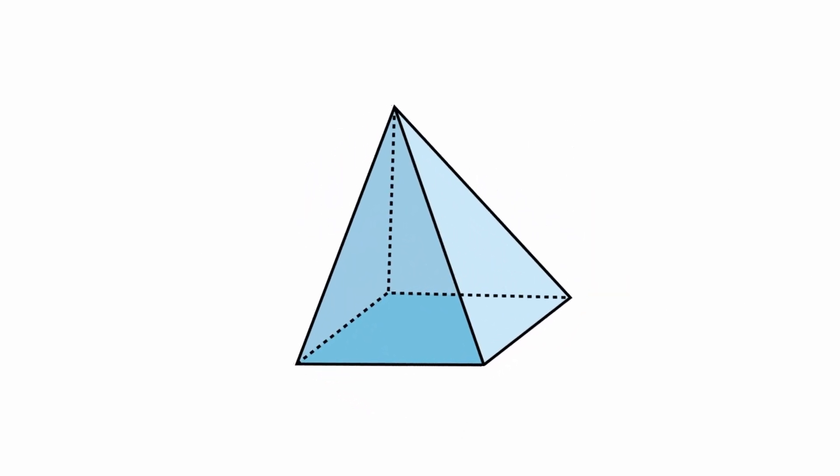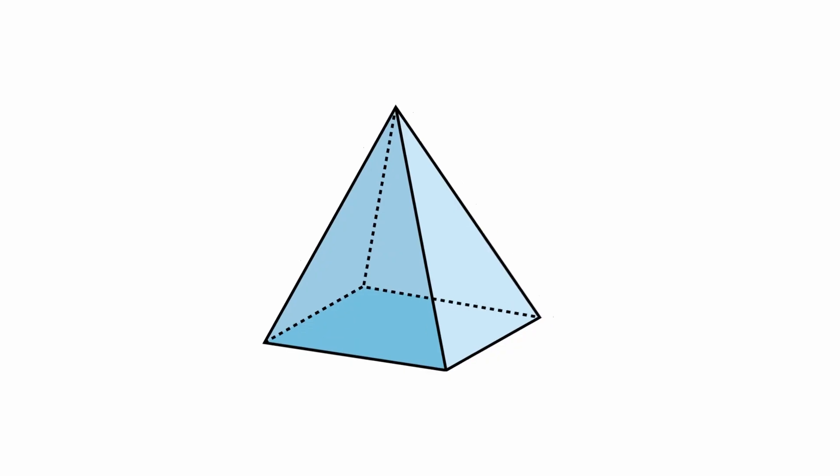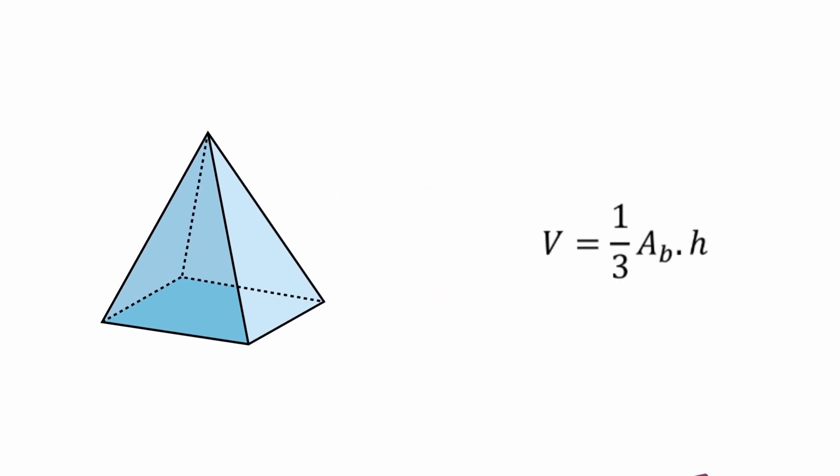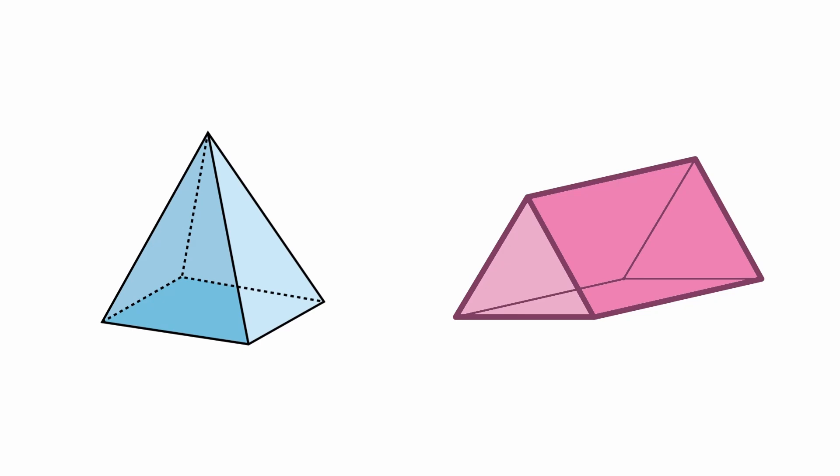Pyramids, on the other hand, have a single base in triangular faces that converge as a vertex. Their volume is determined by V equals one-third AB times H. Both shapes are easy to print thanks to their flat, well-defined structure.